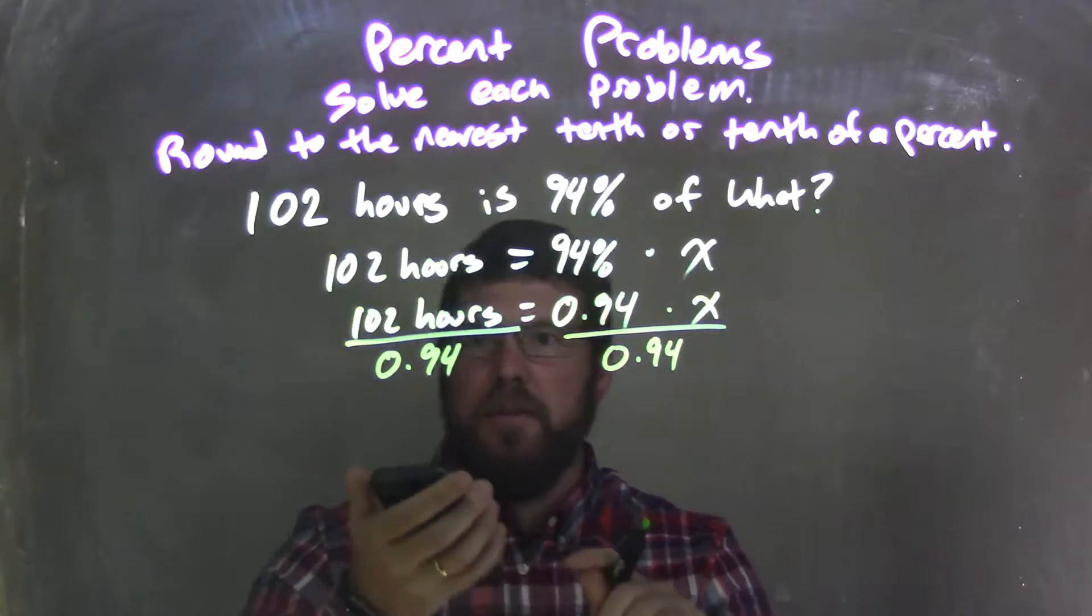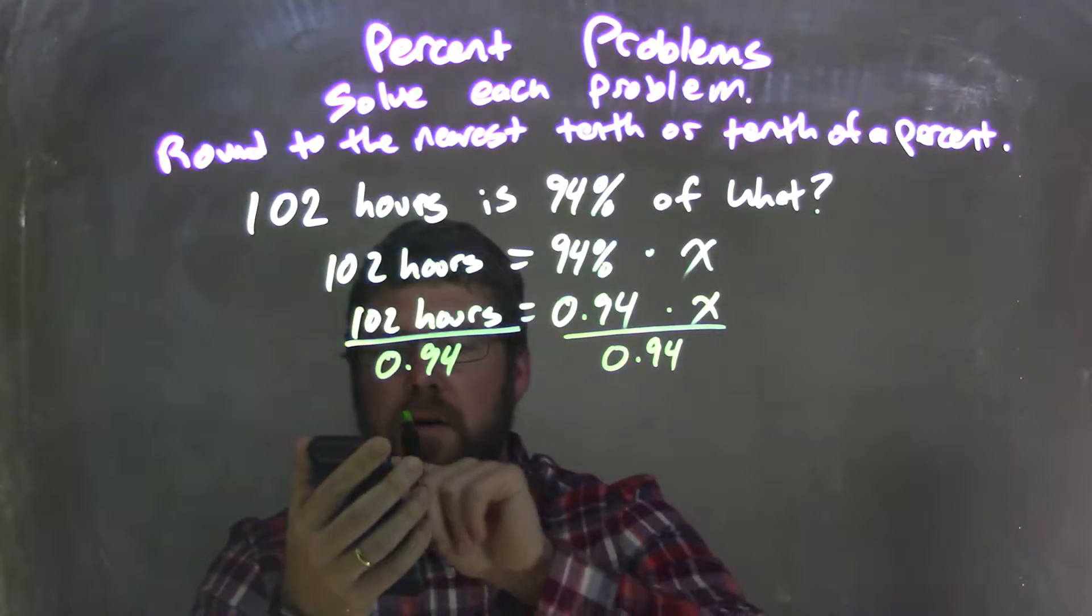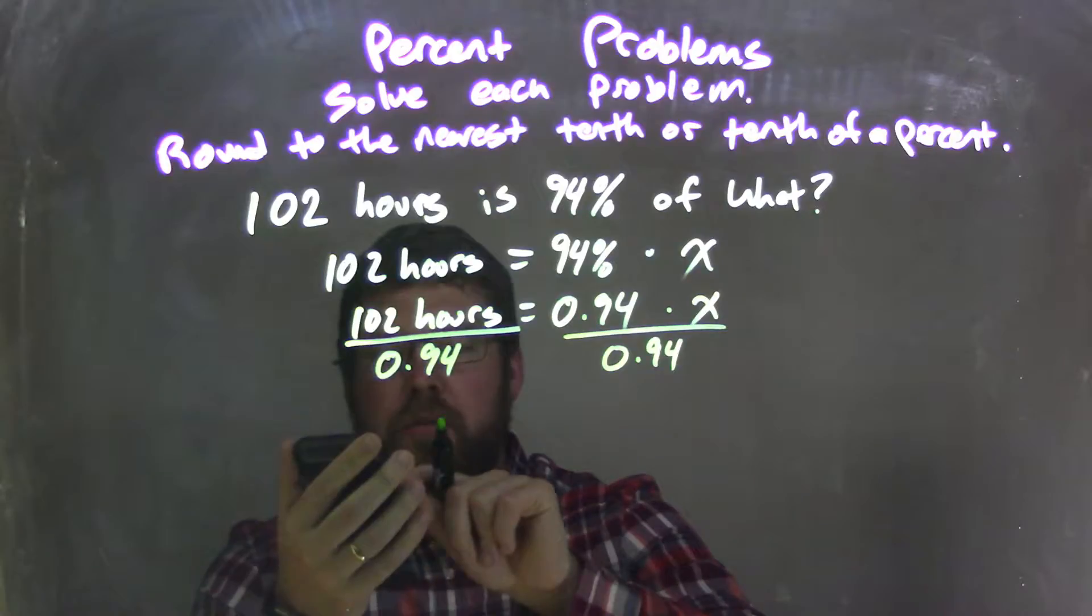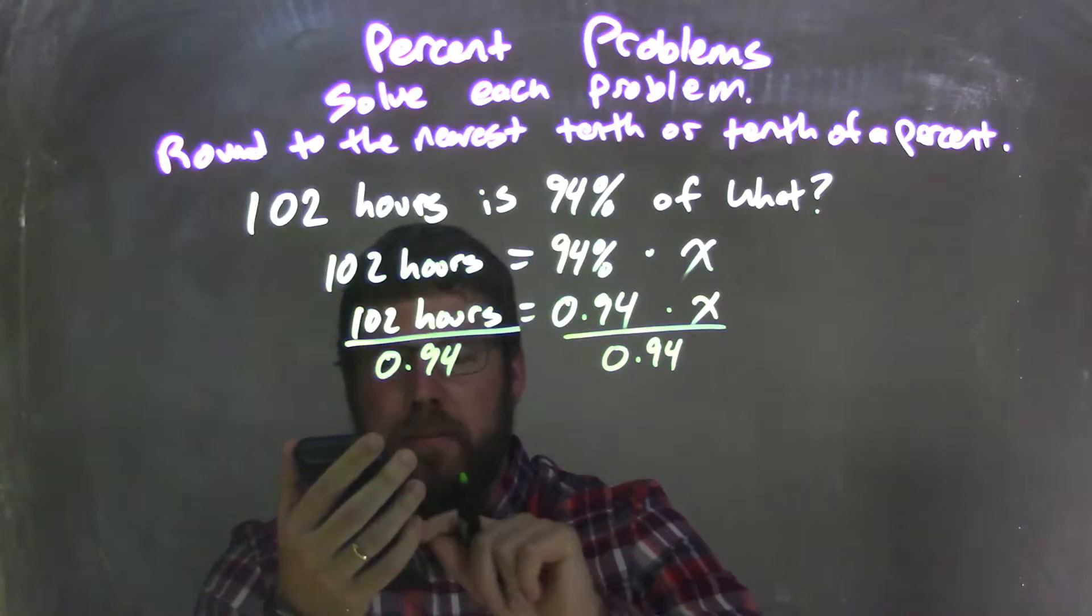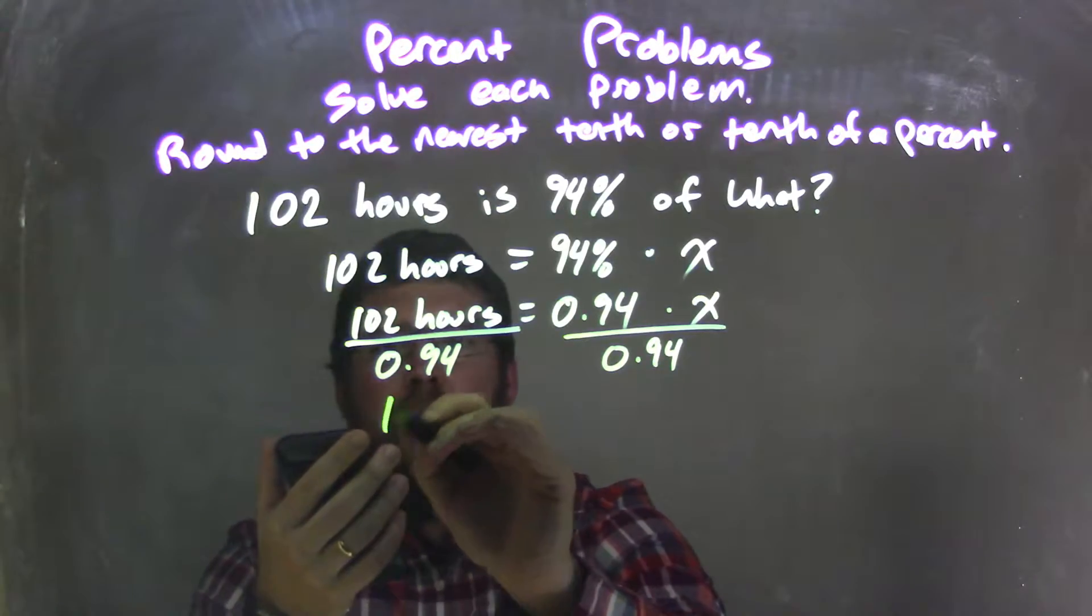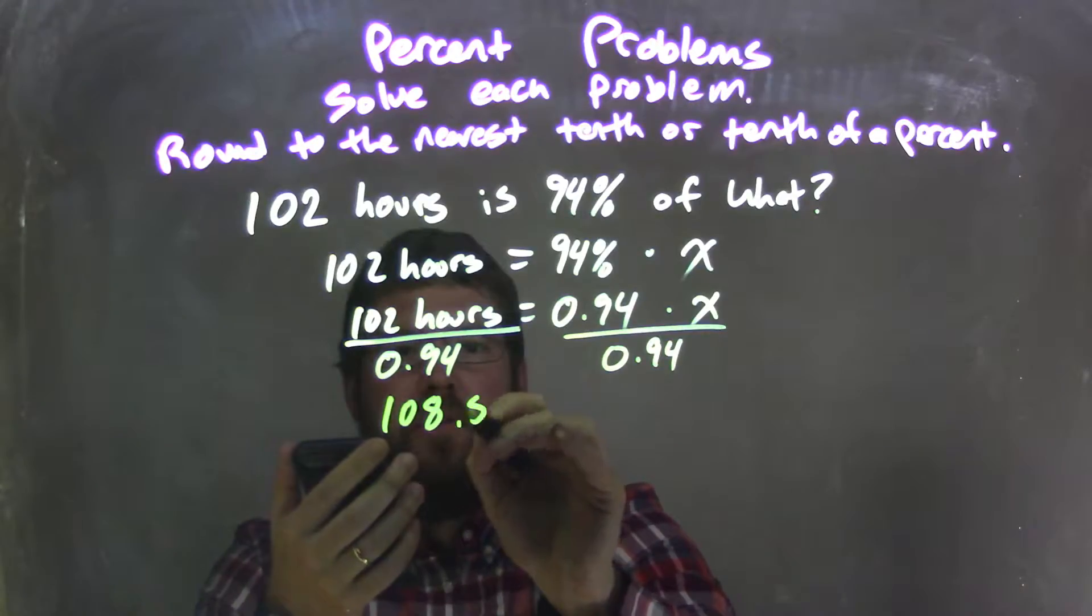102 divided by 0.94, which comes out to be 108.5106 hours.